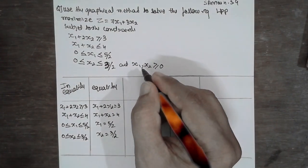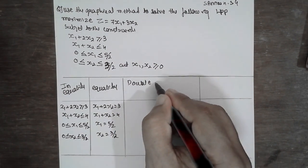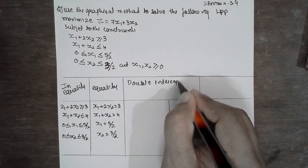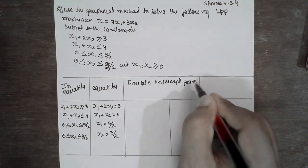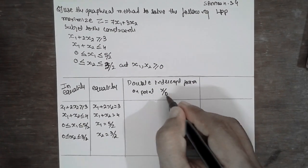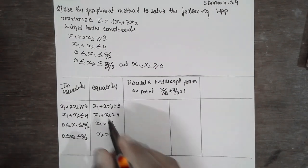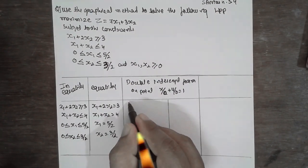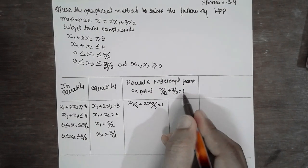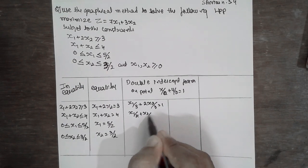Next, we convert to the double intercept form, which is x/a plus y/b equal to 1. So x1 divided by 3 plus 2x2 divided by 3 equals 1 for the first equation, and x1 divided by 4 plus x2 divided by 4 equals 1 for the second equation.